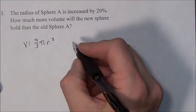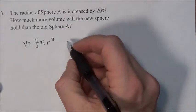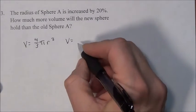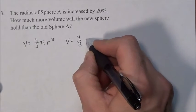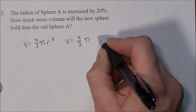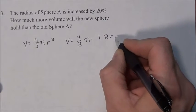Well it increases by 20%, so it's going to be all of it, which is 100%, plus 20%. So that means we're multiplying the radius by 1.2, 120%. So 4 thirds pi times the radius is being multiplied by 1.2 times the radius.